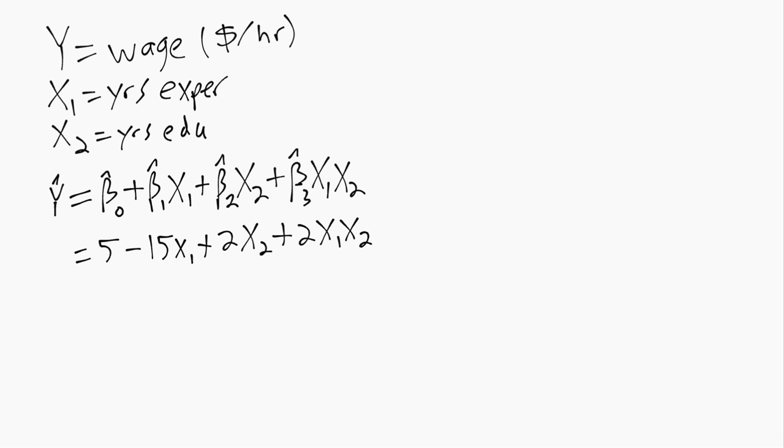If we rewrite this model, we can write it as having a slope with respect to x1 of the negative 15 from the beta hat 1 part, but then also 2 times x2 from the interaction term.